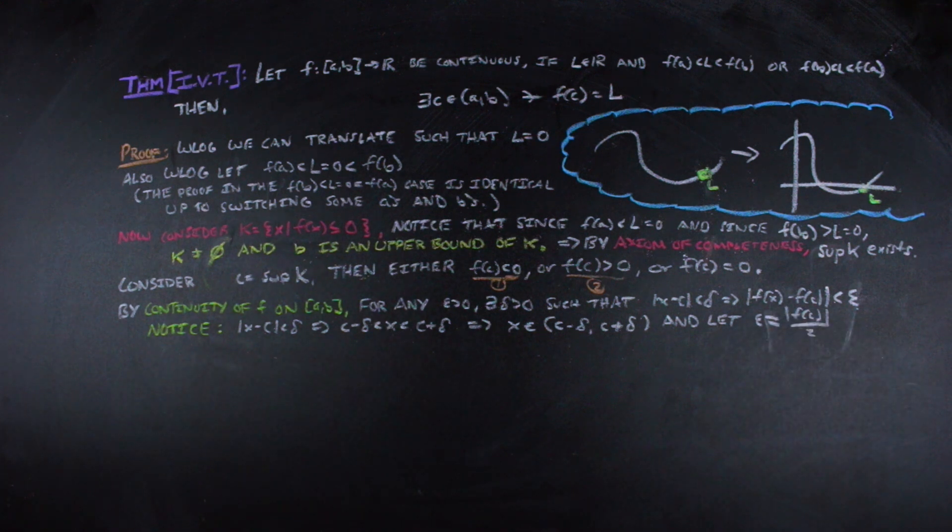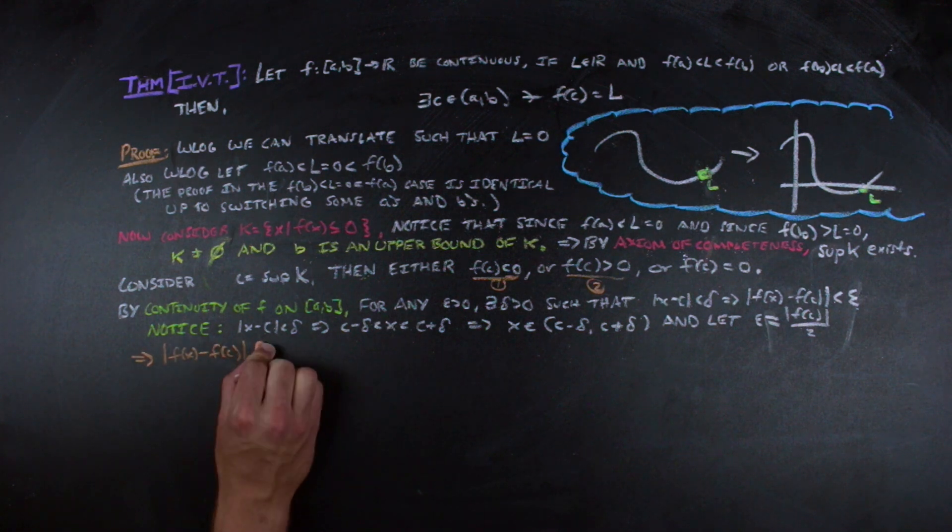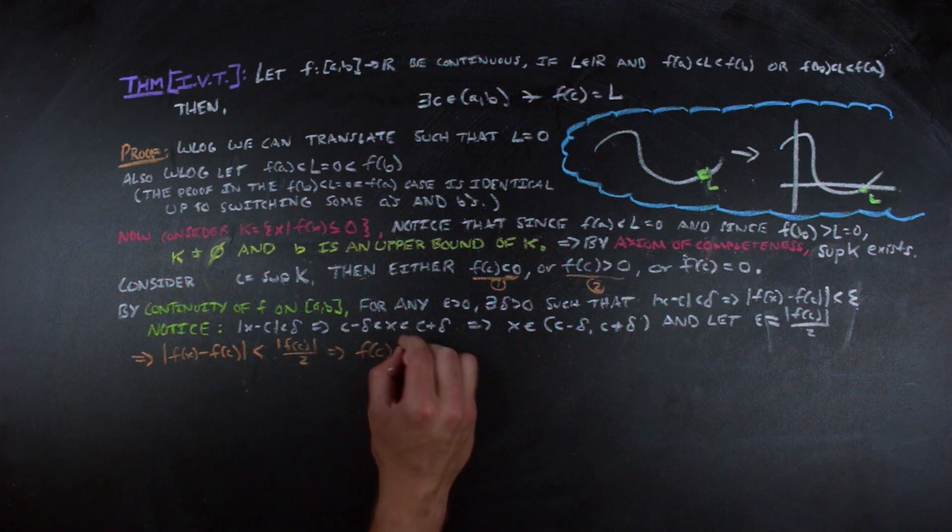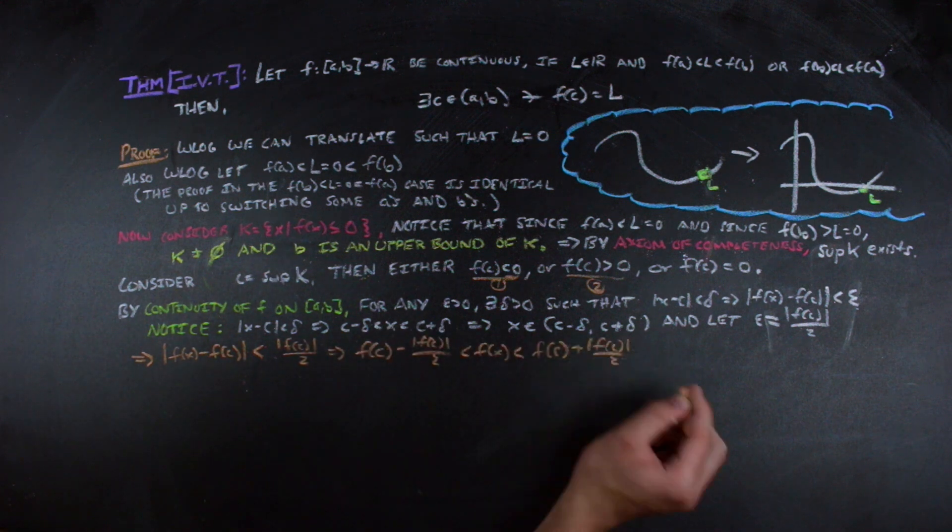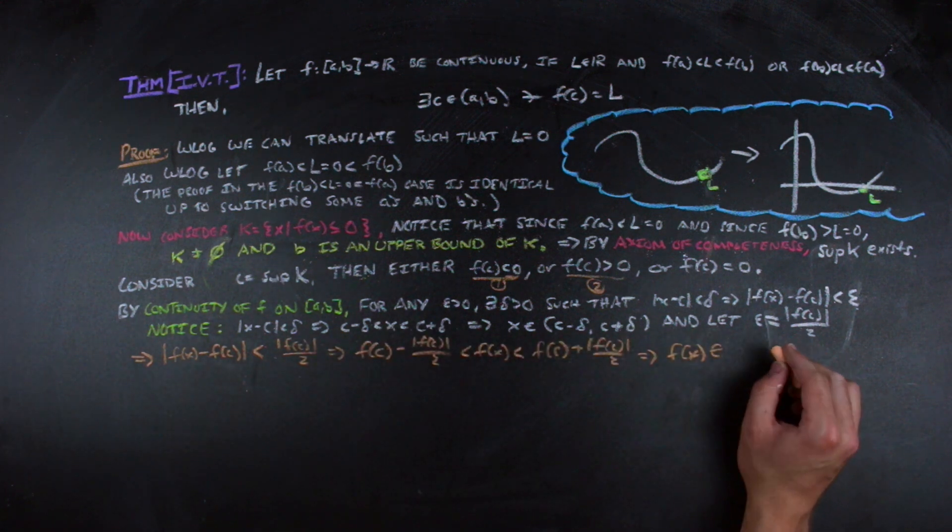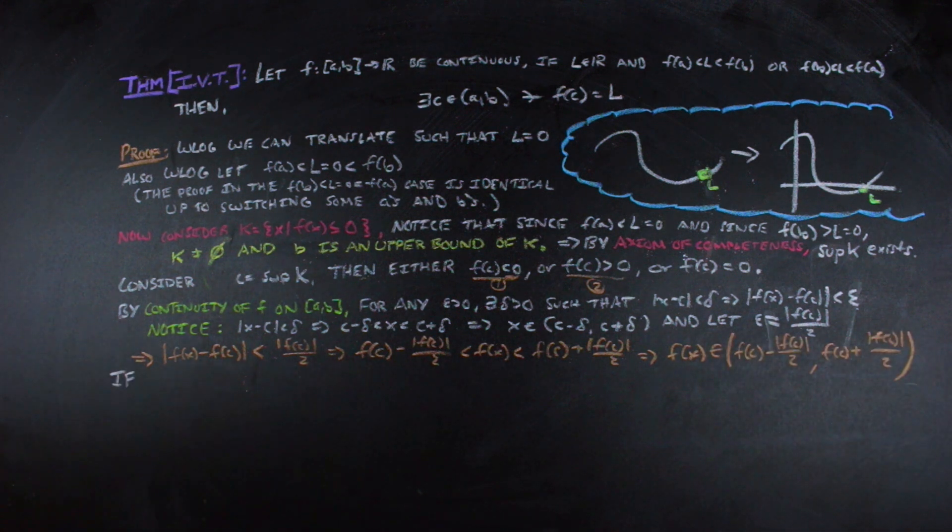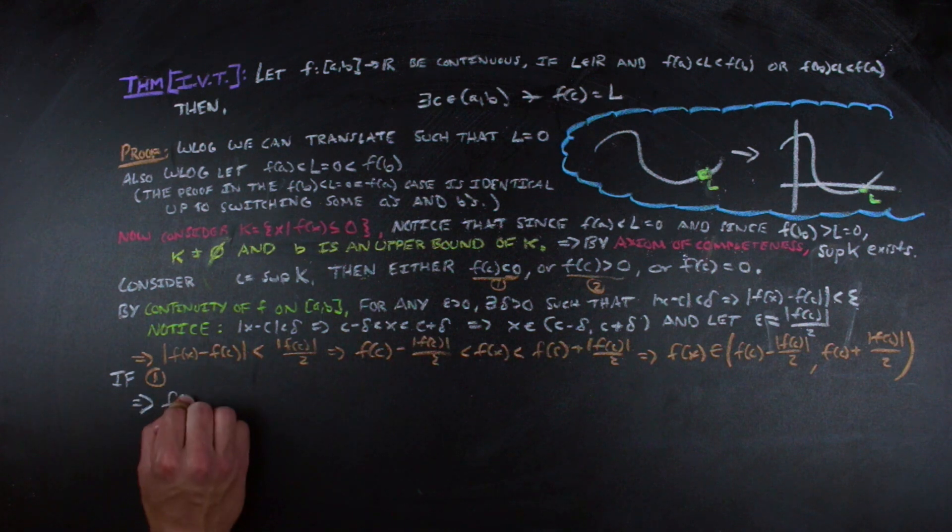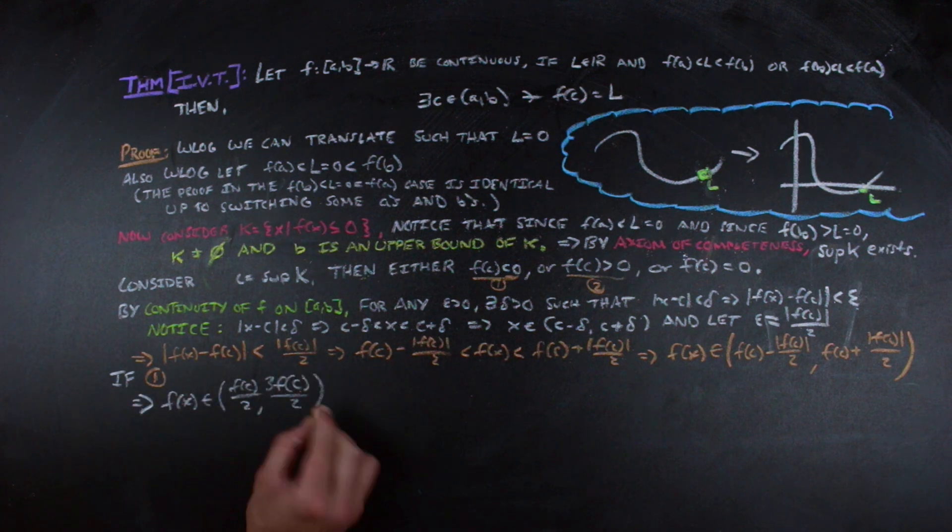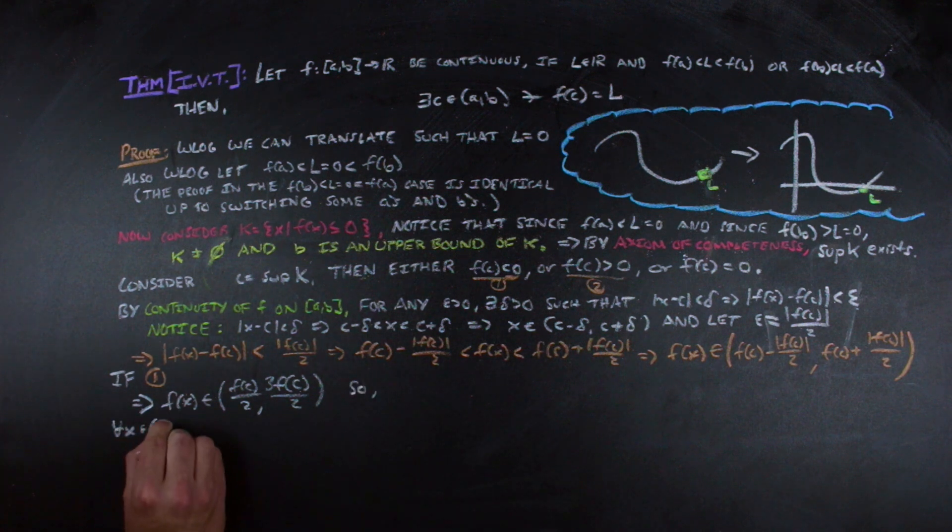So we're going to go ahead and fix our epsilon to be the absolute value of the image of c over 2. Then by continuity, there exists a delta such that we have the following inequality. This implies that the image of x must be between these two values. In the case where f(c) is less than 0, we get the following containment.